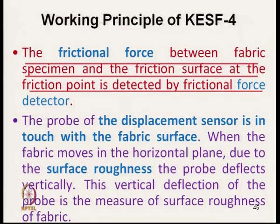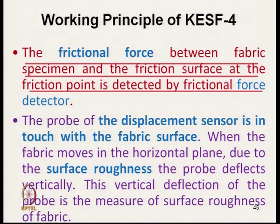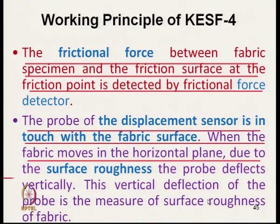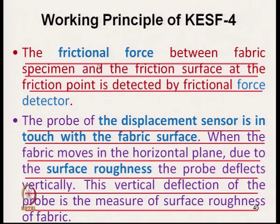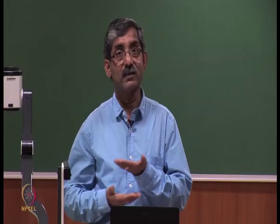That means the probe of the displacement sensor is in touch with the fabric surface. When the fabric moves in the horizontal plane, due to the surface roughness the probe deflects vertically. If the fabric surface is perfectly smooth there would not be any vertical deflection. This vertical deflection of the probe represents the surface roughness. So KESF-4 measures both the frictional characteristics and surface roughness characteristics of fabric.